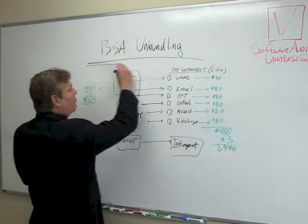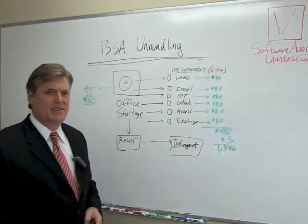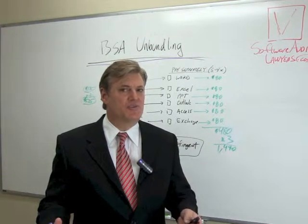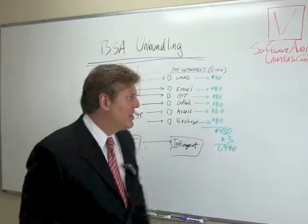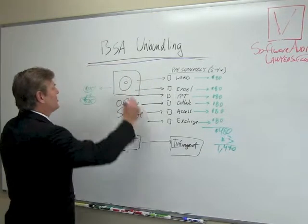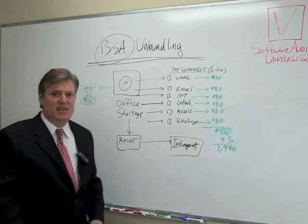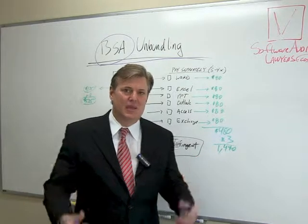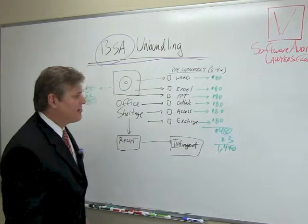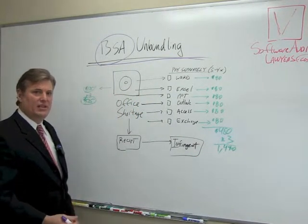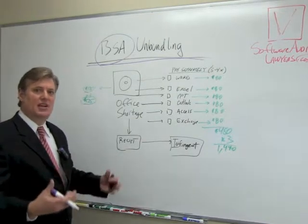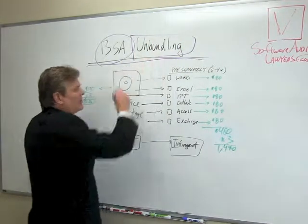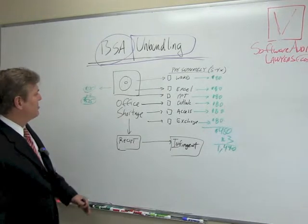This is called unbundling. Some people may say this is a little shifty how they do it if you're short on software. The BSA — the Business Software Alliance — is a trade group that may come after your company if you're not using software legally, meaning making illegal copies or using copies without paying for it. This is what I call unbundling.